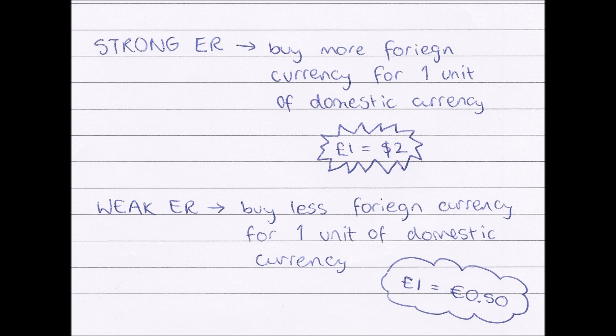With a weak exchange rate, Britain will actually export more, because it's cheaper for someone in France to buy British goods than French goods. For example, if I have one euro in France, I can buy one packet of French pencils. But with that same one euro, I could buy two packets of British pencils, because one euro equals two pounds due to our exchange rate. So in France, people are more likely to buy and import British goods. With a weak exchange rate, imports will be low and exports will be high.